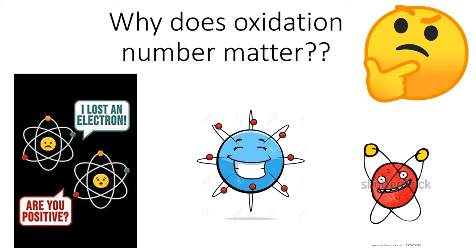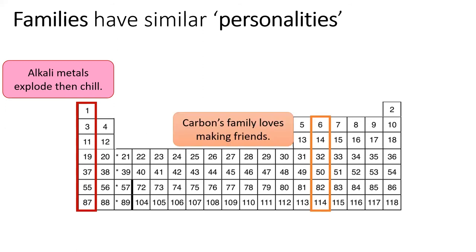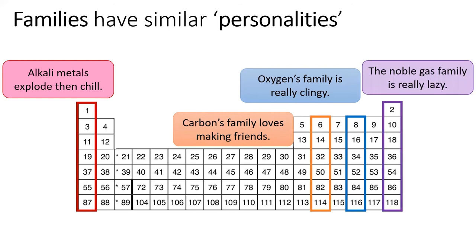As a human, I find it easier to relate to elements when they have human characteristics. So in my view of the universe, families on the periodic table have similar chemical properties because families have similar personalities. At the beginning of the lecture, we talked about sodium and alkali metal. The alkali metals are really explosive, but afterward they get super chill. Carbon's family loves to make friends, even with itself. Oxygen's family is really clingy and they tend to hog things when they do end up sharing. And of course, the noble gases are the laziest family in the whole universe.